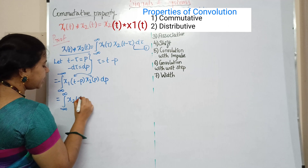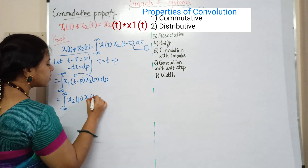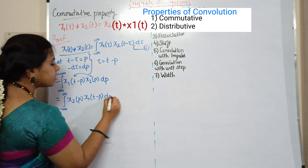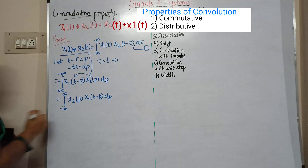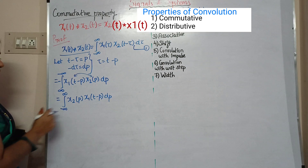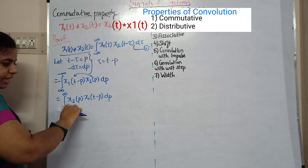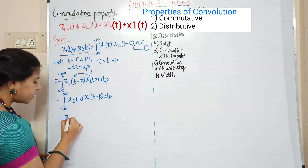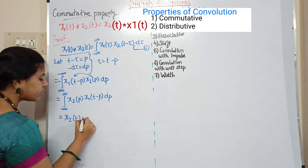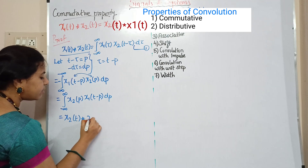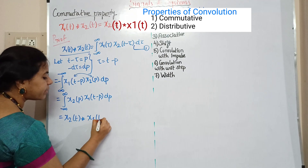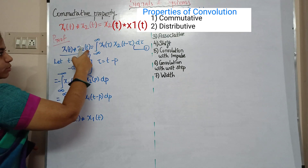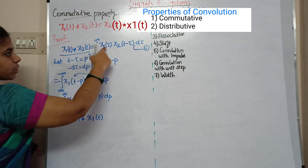x2 of p, x1 of t minus p, integral dp. So this gives us the formula: x1 of t convolution x2 of t. The integral shows x2 of t convolution x1 of t.